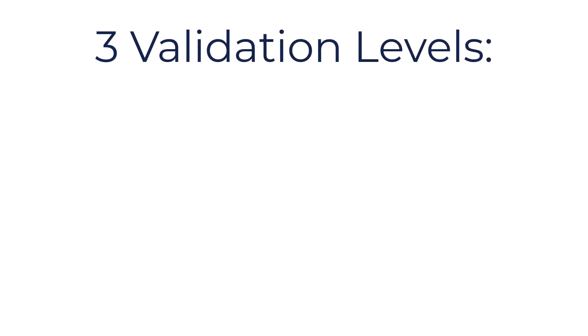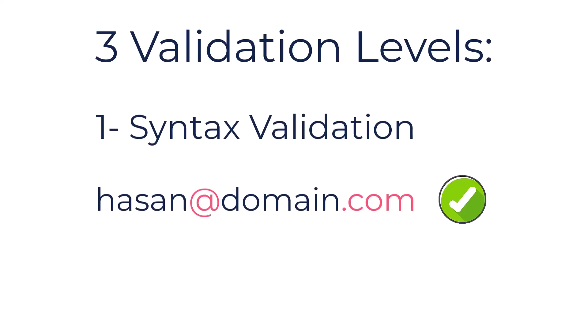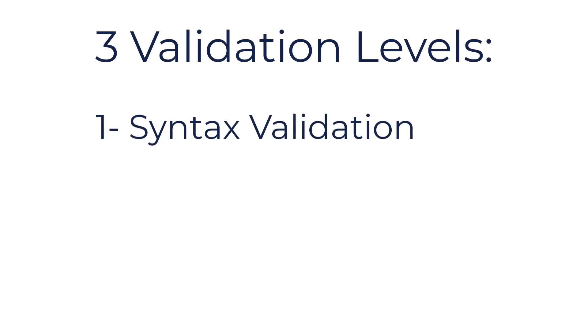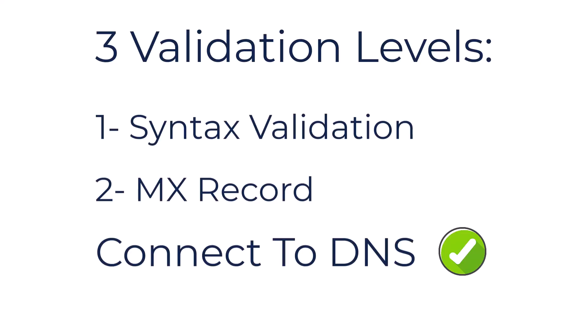Now it's time to learn some technical stuff — I'll try to make it as simple as possible. Understanding these concepts helps a lot in business and email marketing. When validating an email, we have three levels. Number one is syntax validation — ensuring the email format is correct, like having an @ sign and a domain name. Number two is MX domain validation — connecting to the DNS and checking for a mail exchange record to confirm a mail server exists.